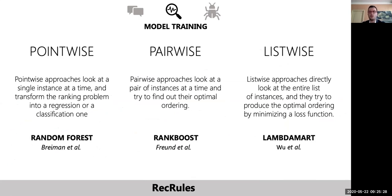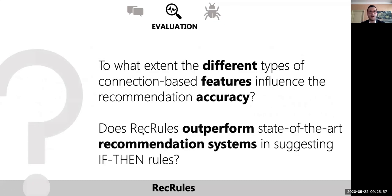To compute top-N recommendations, the extracted features are used to build a ranking model from training data by exploiting a learning-to-rank technique. Different techniques can be used and can be classified into three main categories: point-wise, pair-wise, and list-wise approaches. In RecRules, we explored three baseline learning-to-rank algorithms, one for each category: random forest, RankBoost, and LambdaMART.